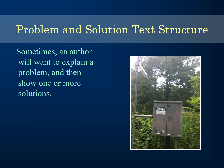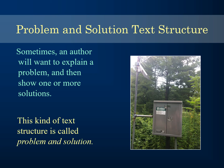Next up is problem and solution. Sometimes an author will explain a problem and then show one or more solutions. A lot of people confuse this with cause and effect, but the difference is that in problem and solution there will be a solution — a way to fix the problem. With cause and effect, it's just a cause and what happens because of it, whether good or bad.